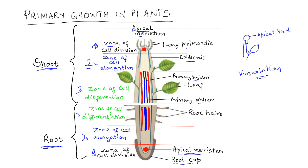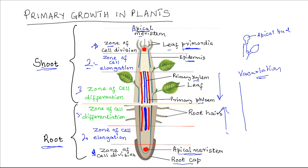The zone of cell differentiation is located after the zone of elongation. This zone consists of cells undergoing specialization to form various primary tissues depending on their location. The leaf primordia grow into leaves. The primary tissues, once formed, are pushed behind to form the permanent tissues. These new tissues are pushed in this direction, which contributes to the overall increase in length of the plant.